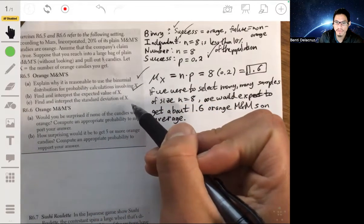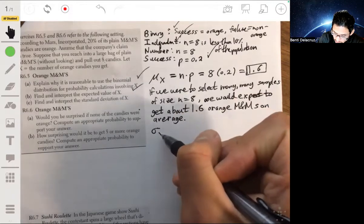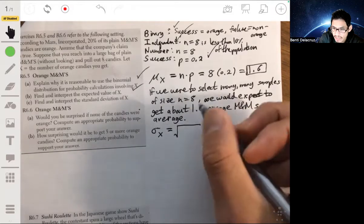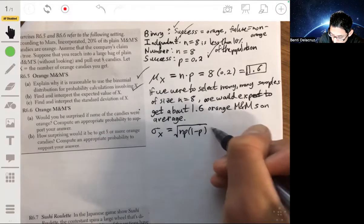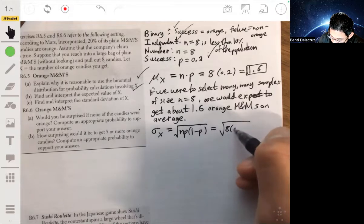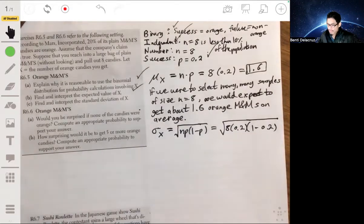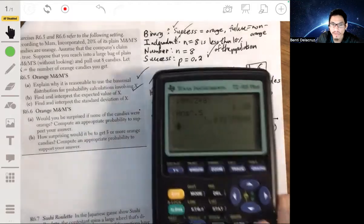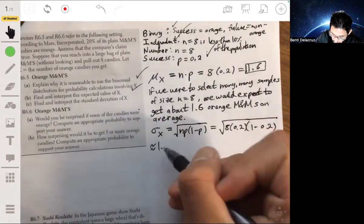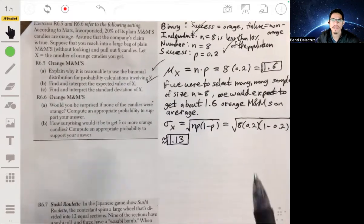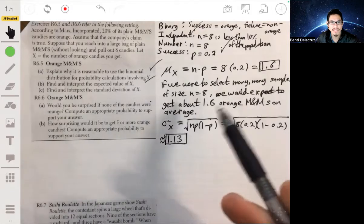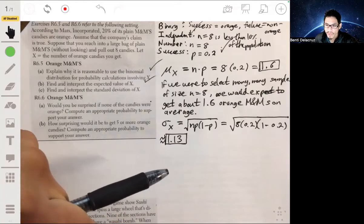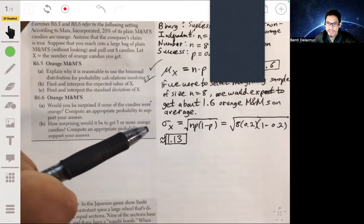Find and interpret the standard deviation of X. There's also a formula for this. The standard deviation of X, sigma sub X, you find that by taking the square root of N times P times 1 minus P, which is the square root of 8 times 0.2 times 1 minus 0.2. You get about 1.13. What does this say? If we were to select many, many samples of size eight M&Ms, we would expect the number of M&Ms that we get to be about 1.13 away from the mean amount, 1.13 away from 1.6.